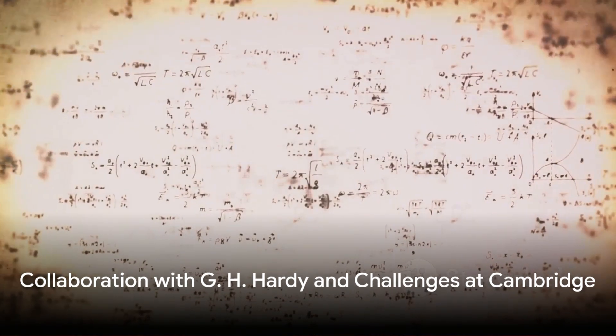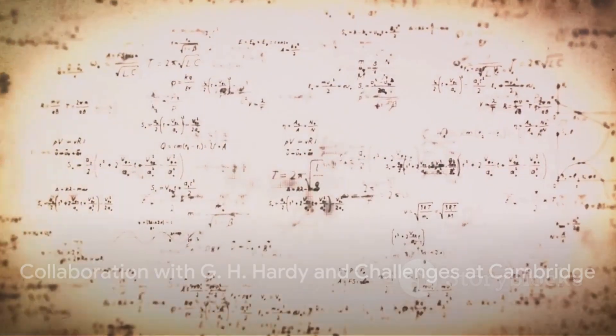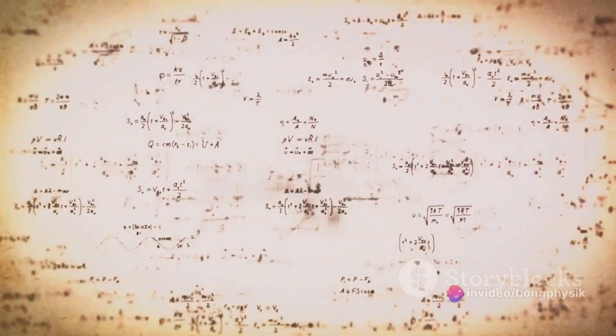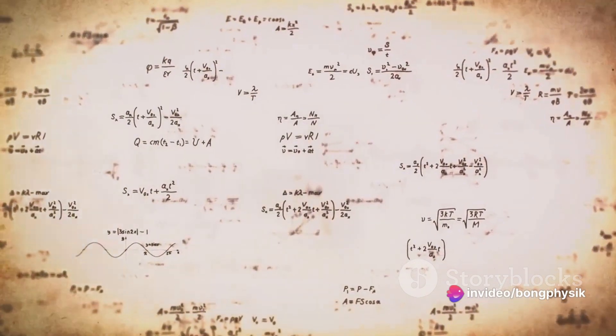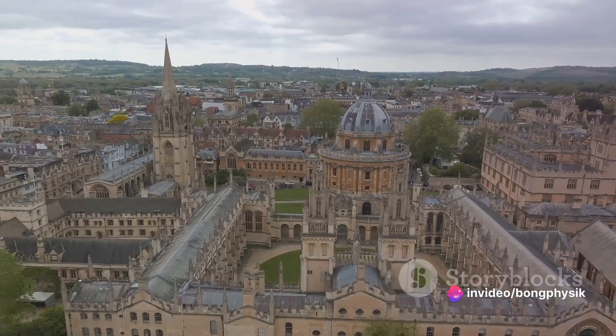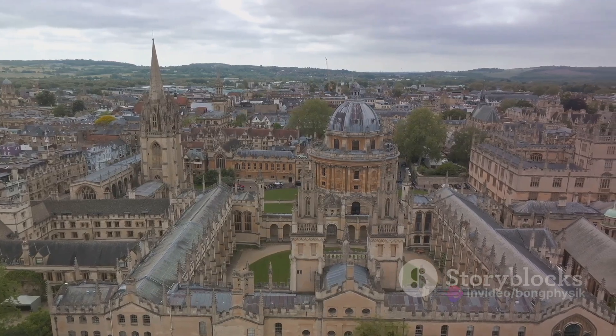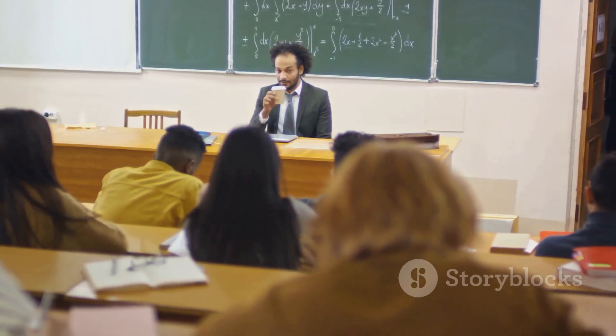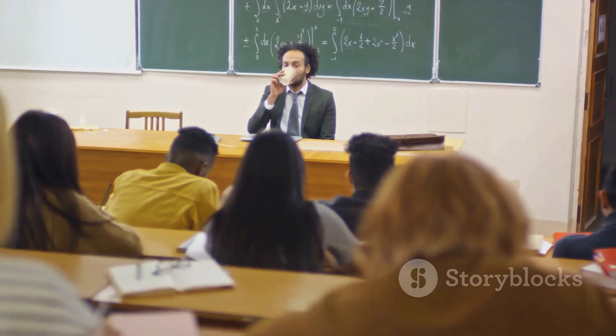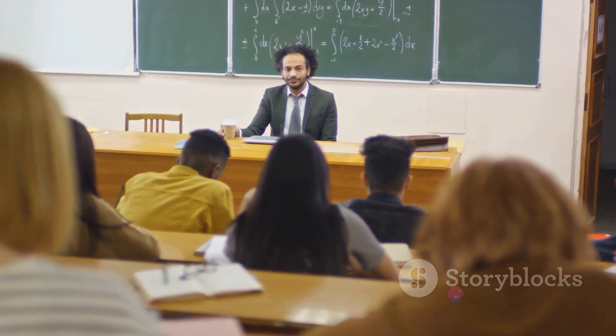Ramanujan's life took a dramatic turn when he began a correspondence with the British mathematician G.H. Hardy in 1910. Recognizing Ramanujan's genius, Hardy arranged for him to come to Cambridge University. This was a significant achievement, but it also marked the beginning of a new set of struggles for Ramanujan.